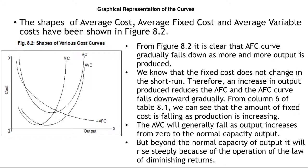But beyond the normal capacity of output, AVC will rise steeply due to the operation of the law of diminishing returns. The shapes of average cost, average fixed cost, and average variable cost have been shown in Figure 8.2. The AFC curve gradually falls as more and more output is produced, because fixed cost does not change in the short run. An increase in output reduces the AFC, so the AFC curve falls downward gradually, as seen in column 6 of Table 8.1.